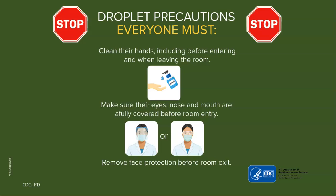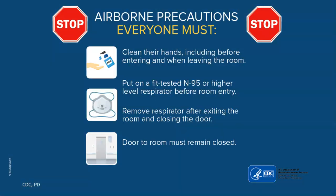Let's look at droplet precautions. Again, clean your hands before entering and leaving the room. With droplet precautions, we want to make sure that your eyes, nose, and mouth are carefully covered before you enter the room — you can either wear a face shield or goggles. Remove the face protection before you leave the room, just like with contact precautions PPE. The key addition for droplet precautions is eyewear protecting your eyes, nose, and mouth. A patient can be on both contact and droplet precautions — or, as with COVID-19, all three.